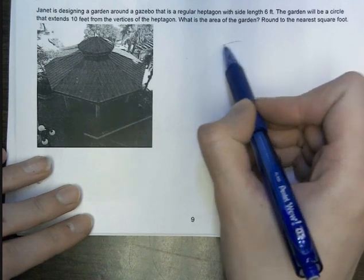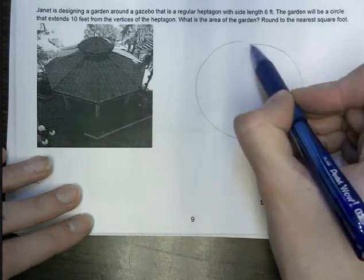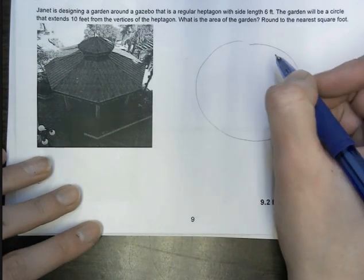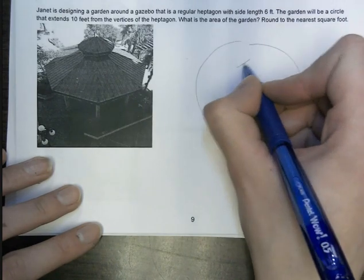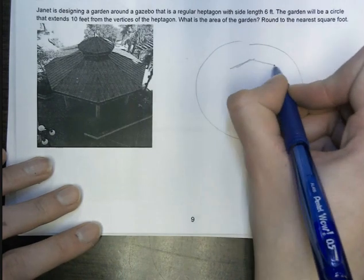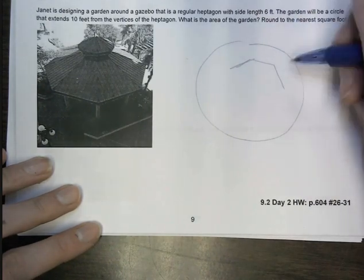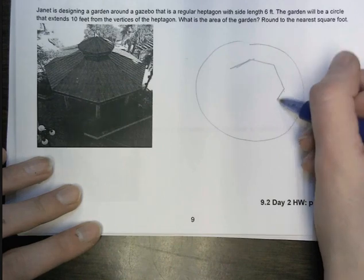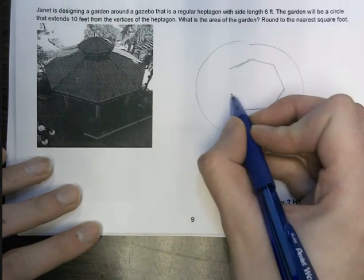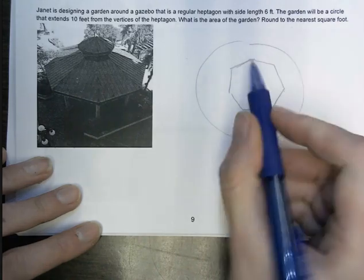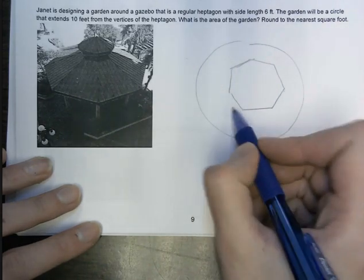So we've got this circular garden going around this heptagon, which has seven sides. So, seven, so we've got seven there, one, two, three, four, five, six, seven. Go with that.